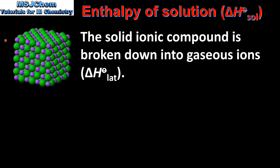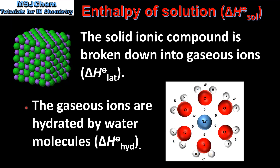The dissolving of an ionic compound can be divided into two steps. In the first step the solid ionic compound is broken down into gaseous ions. This is known as the lattice enthalpy. In the second step the gaseous ions are hydrated by water molecules. This is known as the enthalpy of hydration. We'll look at hydration in more detail later in the video.